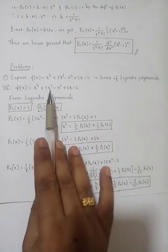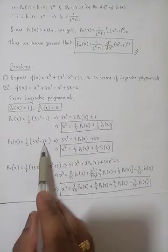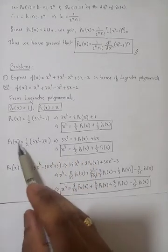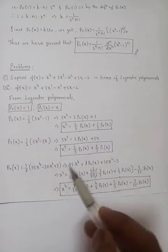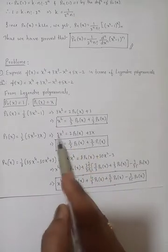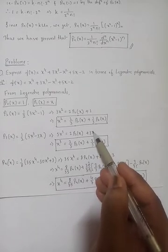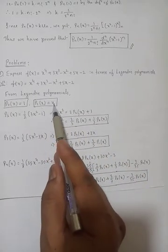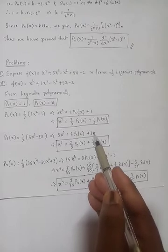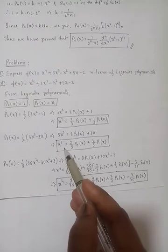For x³, the value comes from P3(x). P3(x) is given by (1/2)(5x³ - 3x). From this, 5x³ = 2P3(x) + 3x, so x³ = (2/5)P3(x) + (3/5)x. Remember, we do not keep x as it is — we replace x with P1(x). So x³ = (2/5)P3(x) + (3/5)P1(x). The final result must not contain x in raw form.